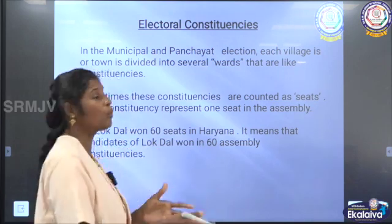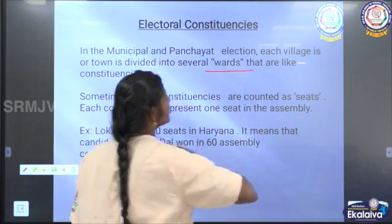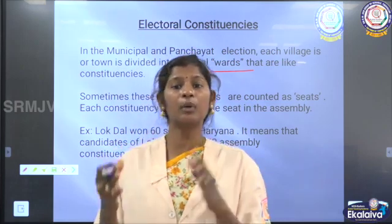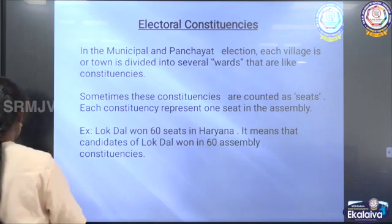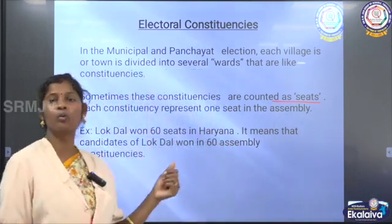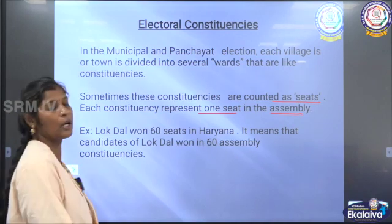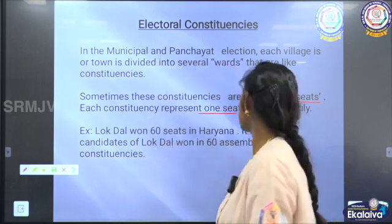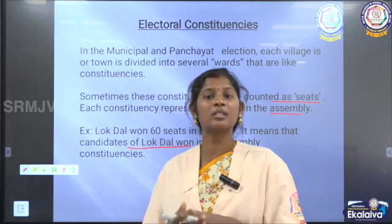For holding the municipal and panchayat election, each village or each town is divided into small wards. This ward acts like a constituency. These constituencies are also counted as seats, because each constituency represents one seat in the assembly. For example, we have learnt that the Lok Dal won 60 seats in the Haryana state assembly, meaning they won 60 assembly constituencies.